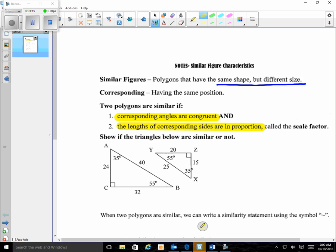Our first question says show if the triangles below are similar or not. So the first thing I'm going to do, these two triangles are facing two different ways. So I'm actually going to flip this smaller triangle and make it face the same way as my bigger triangle. So I'm going to redraw it. You don't have to be an artist, you just got to be able to read what you're writing.